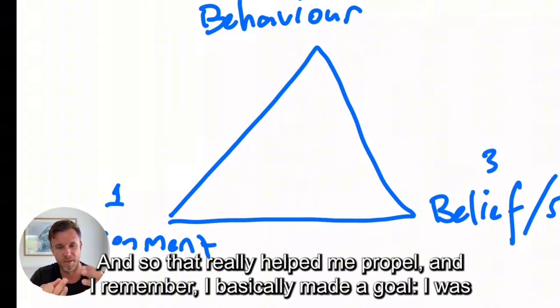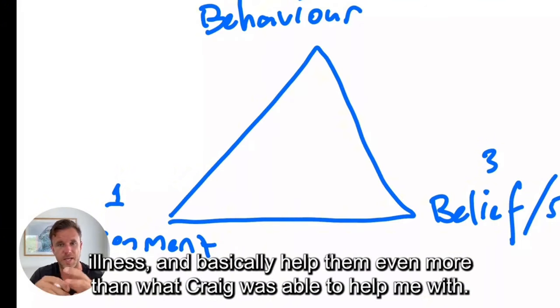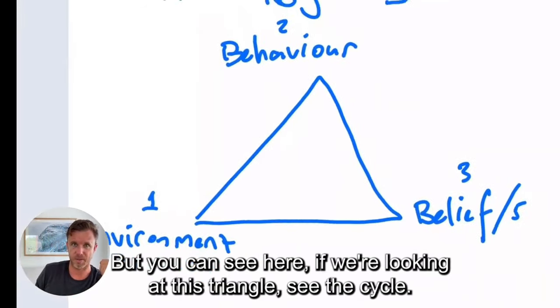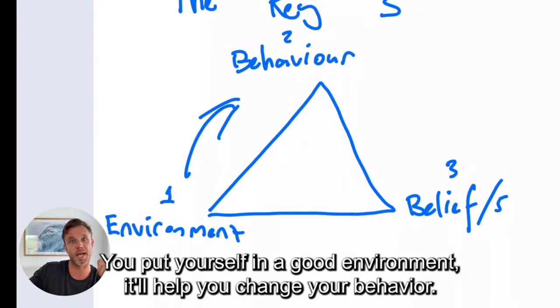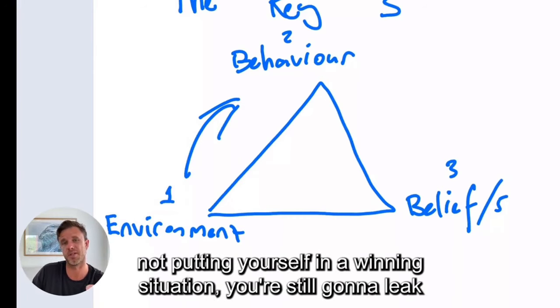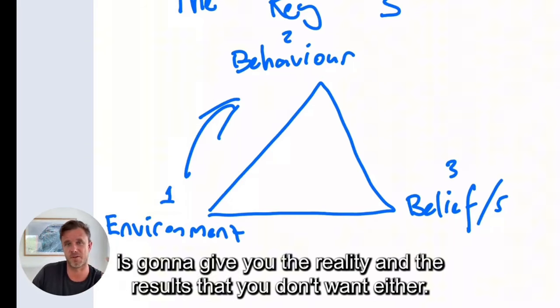I put myself in that winner's environment. He always spoke about attitude. He spoke about you being in control of the 24 hours that you've got every single day. And so that really helped me propel. And I remember I basically made a goal. I was like, I want to be the Craig Harper for the people who are struggling with chronic illness and basically help them even more than what Craig was able to help me with. But you can see here, if we're looking at this triangle, you see the cycle, put yourself in a good environment, it'll help you change your behavior. If you're in a shitty environment, you're not being supported, you're still going to leak behaviors that don't actually serve you, which is going to give you the reality of the results that you don't want either.